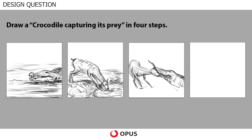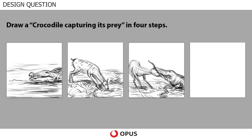Here we are drawing the crocodile taking grip on the deer's head — it has a firm grip and is trying to drag the deer towards it. The prey is trapped in its jaw. We are showing the same scene where the deer had been trying to drink water.